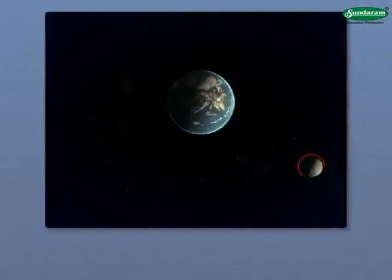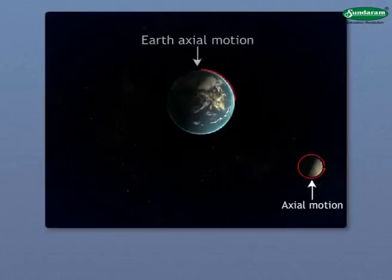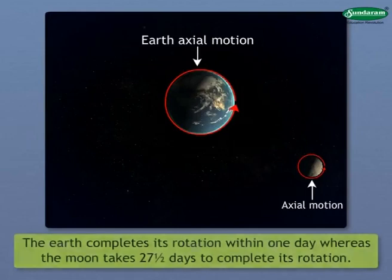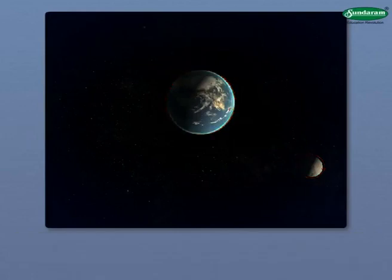The Moon's axial motion is quite slow as compared to that of the Earth. The Earth completes its rotation within one day, whereas the Moon takes 27 and a half days to complete its rotation. However, in almost the same period, it completes its revolution around the Earth.